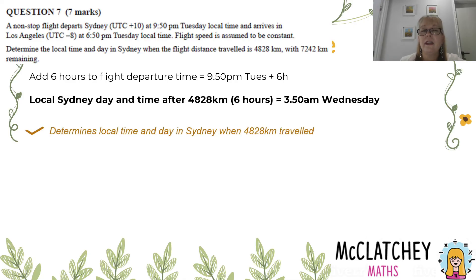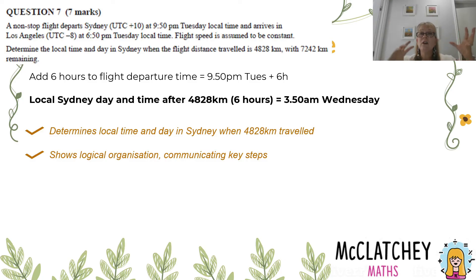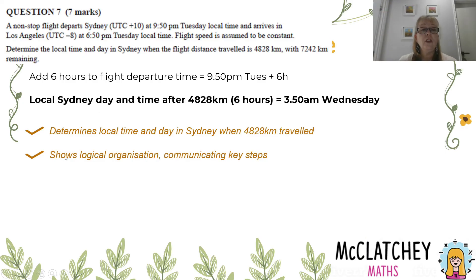You might be wondering how that adds up to 7 marks — there's also a mark for showing logical communication and communicating the key steps. This is the first time on this paper we've seen that requirement; in past papers it sometimes appears two or three times. This is a really complex question — the final question on the paper — and it really only draws on knowledge about time zones and time differences, not latitude and longitude, although the kilometres might lead some people down that rabbit hole. The real complexity was working out that percentage to find the time.